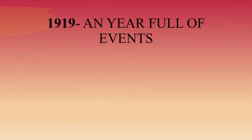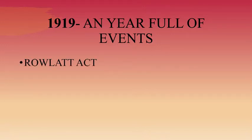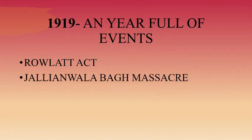In 1919, the government passed the Rowlatt Act, which gave enormous power to the British government to repress political activists and allowed detention of political prisoners without trial for two years. Gandhi Ji wanted a non-violent movement against such unjust laws.